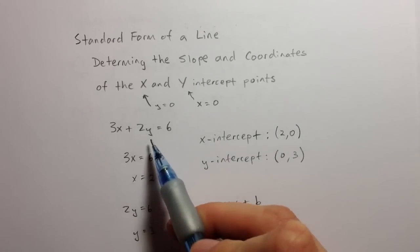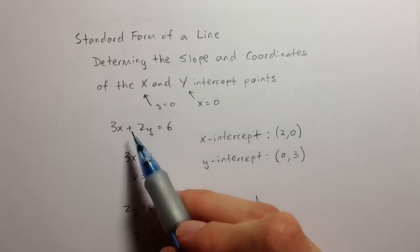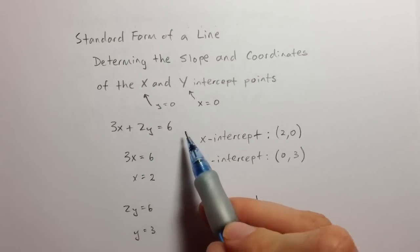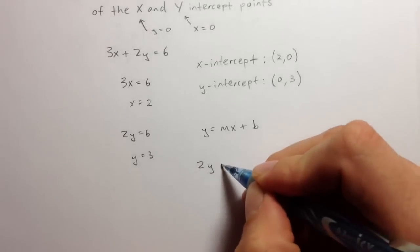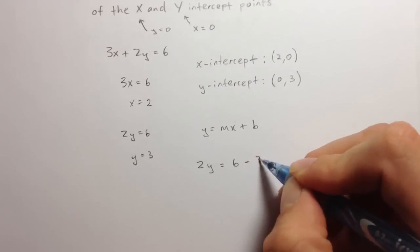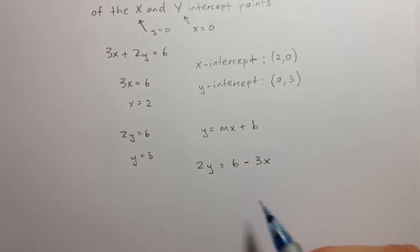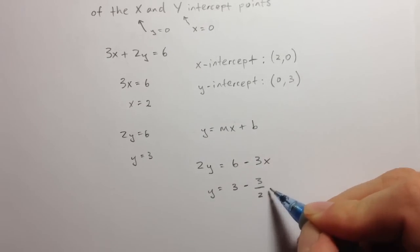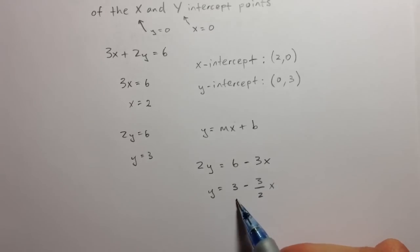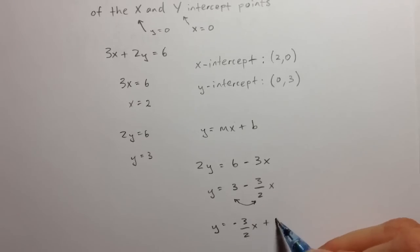We need to write this equation in standard form. If I go ahead and subtract 3x from both sides of the equation, I'm going to get 2y equals 6 minus 3x. If I divide the entire equation by 2, I get y equals 3 minus 3 halves x. Now, if I just switch these two, I get y equals negative 3 halves x plus 3.